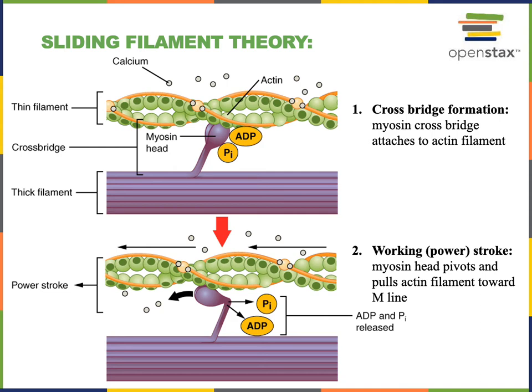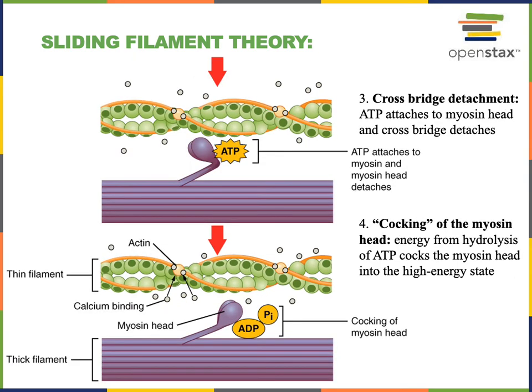The second step of the power stroke cycle is the working or power stroke where the myosin head pivots pulling on actin — the same basic step seen in skeletal muscles. In the next step, ATP binds to myosin and stimulates crossbridge detachment. Then myosin performs hydrolysis of ATP, and the energy released is used for cocking the myosin head in order to return to the high energy conformation where crossbridge formation began.